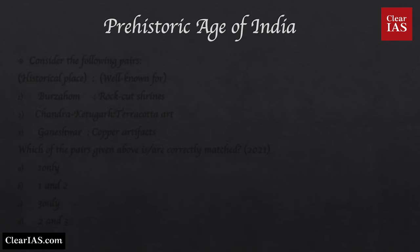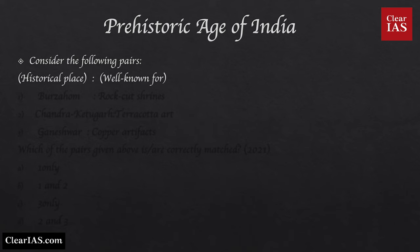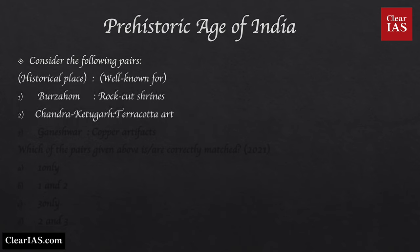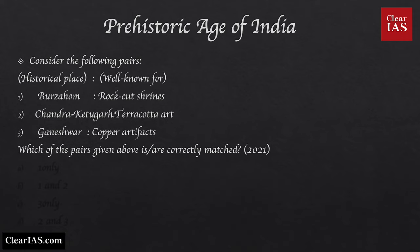Now we'll see the topics to be learnt for both Prelims and Mains. As I said in the last video, it's easy to remember if we learn chronologically. Starting with the prehistoric age of India — a question mentioning prehistoric sites was asked in 2021. Consider the following pairs: historical place / well known for. 1. Burzahom — rock shrines. 2. Chandraketugadh — terracotta art. 3. Gyaneshwar — copper artifact. Which of the pairs is or are correctly matched?